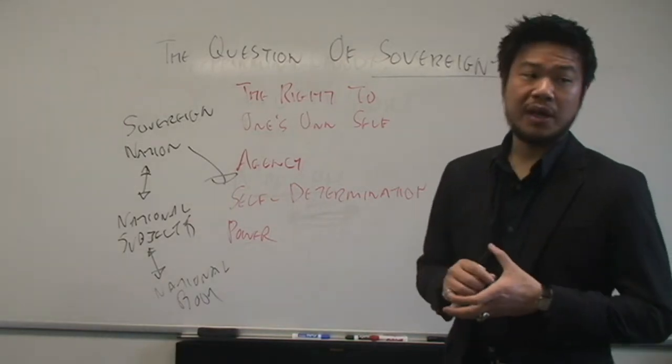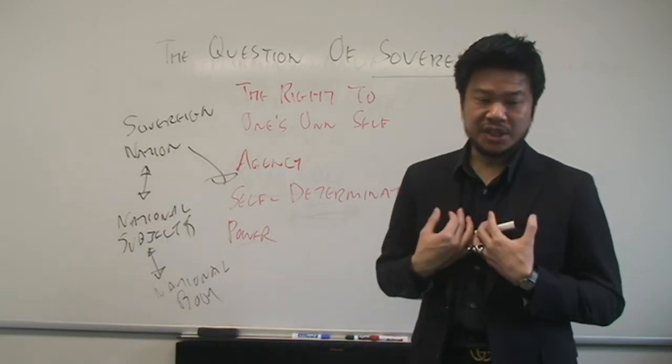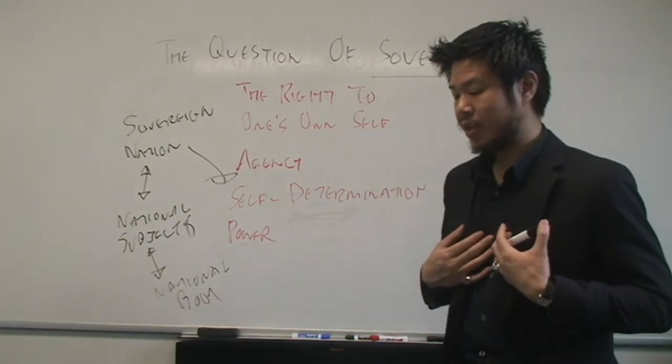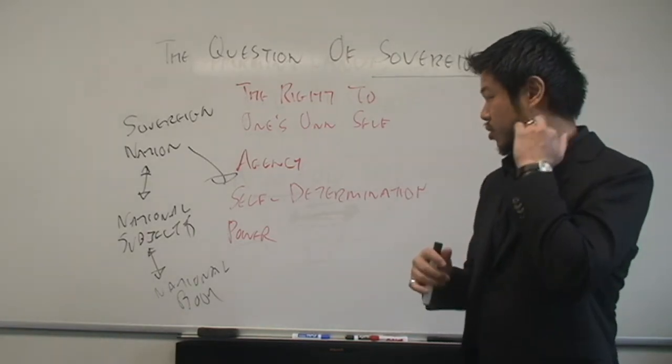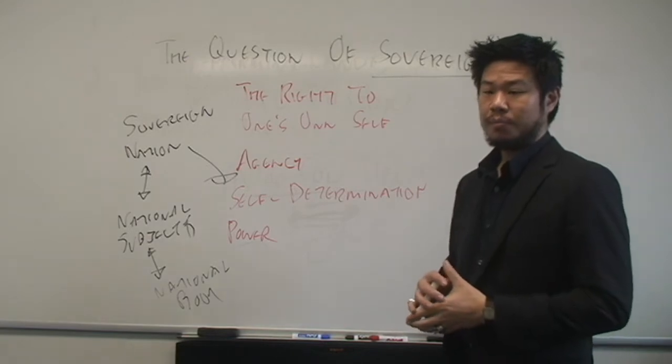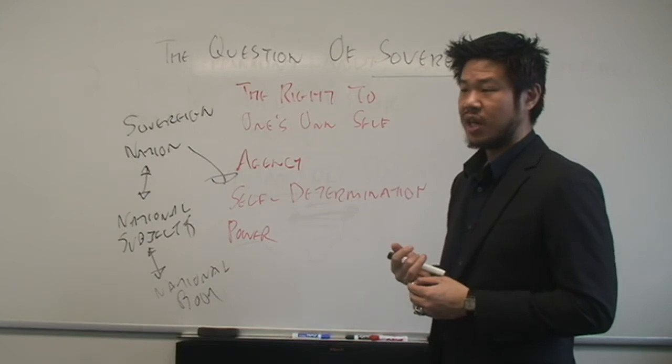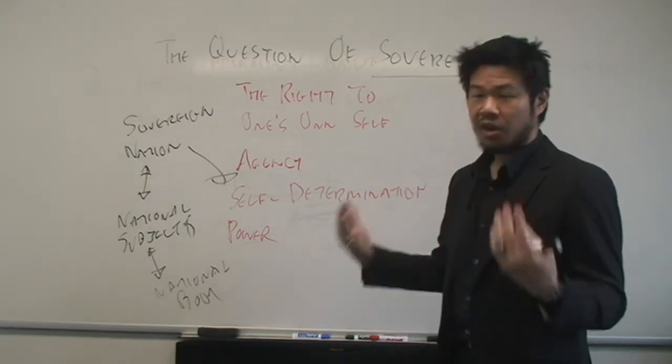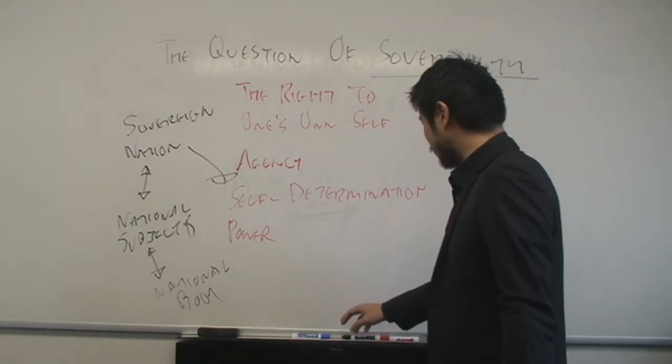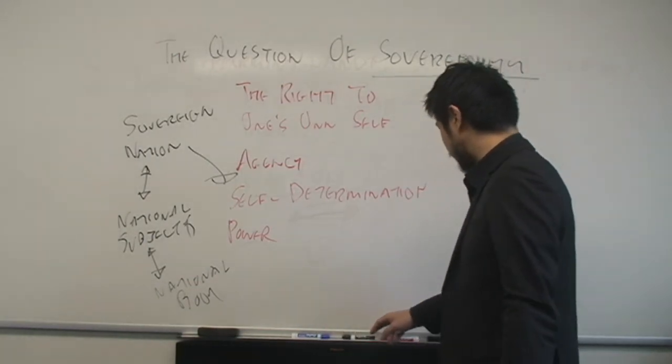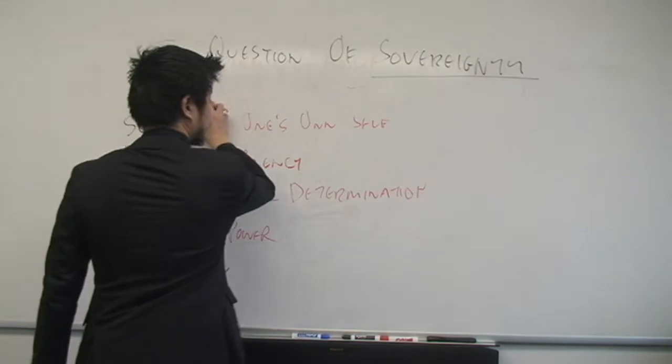This is the question of sovereignty. Whenever you hear someone talking about my rights, my choice, my agency, my prerogative, the more technical and expansive idea, the theory that's coming from, is the philosophical question of sovereignty. That's the big - it all has roots in Western humanism.